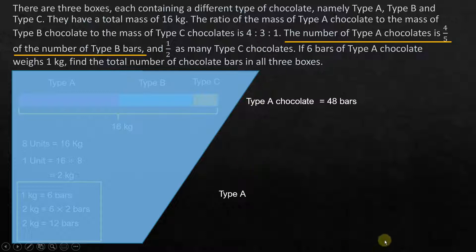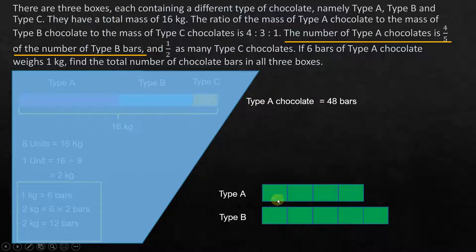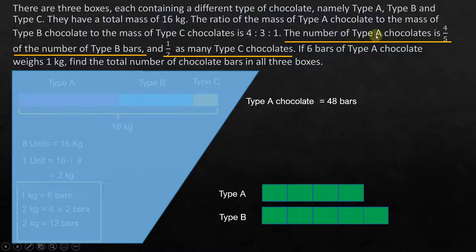Type A is four-fifths of the number of type B bars, which means type A is 4 units and type B is 5 units — because type A is four out of five, so that is the relationship between type A and type B. We also see that type A is half as many as type C chocolates.